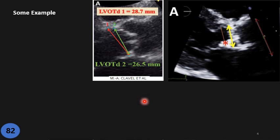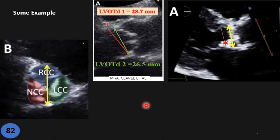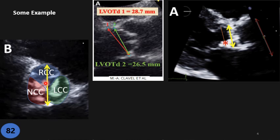Can we measure LVOT on short axis? Sure — if you have a good short-axis view where you can see the cusp coaptation and a nearly circular ring with clear borders, go ahead. Measure inner to inner along the line that passes through the middle of the RCA to the commissure of the LCC and non-coronary cusp. This will be almost perfect and acceptable.